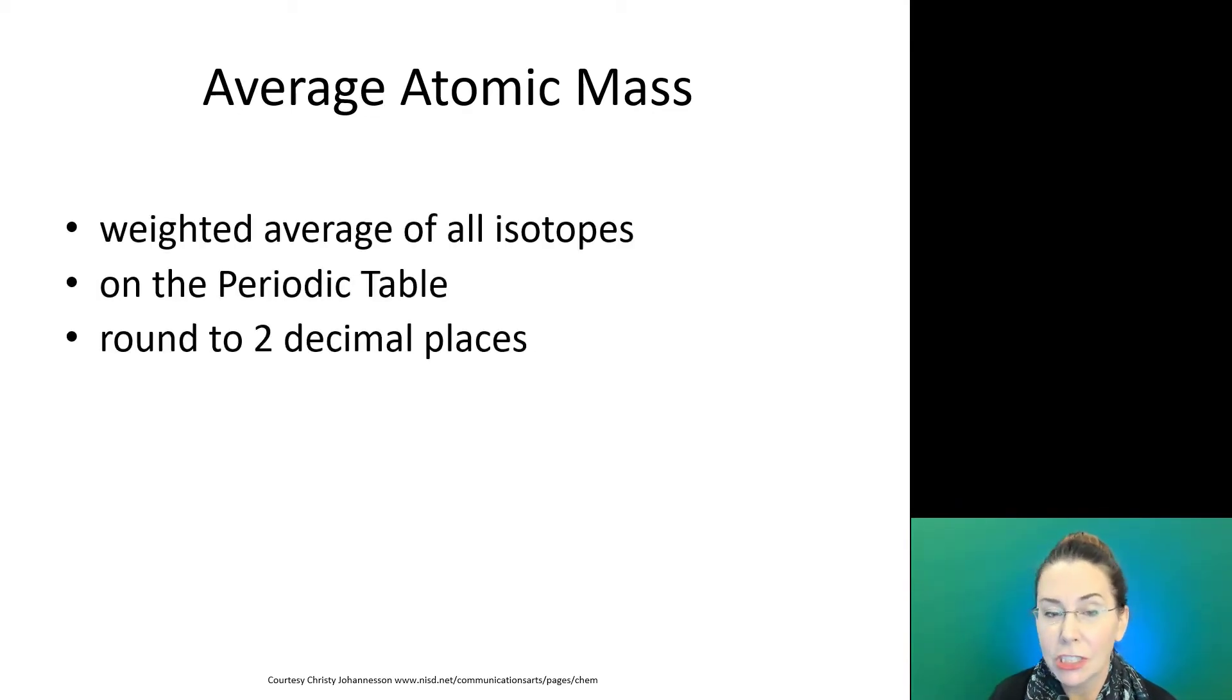Your average atomic mass is the weighted average of all your isotopes. This is the value that's shown on the periodic table. When we use it in chemistry, we generally round to two decimal places before making use of our average atomic mass in calculations.